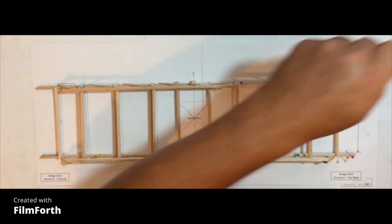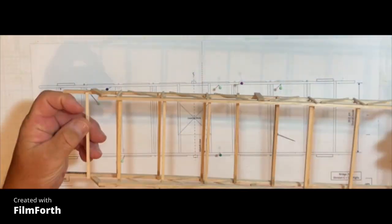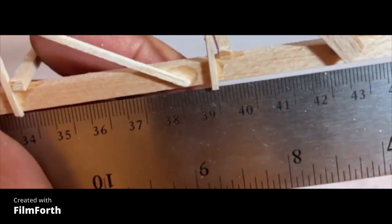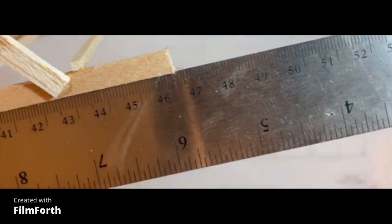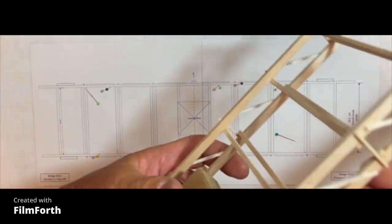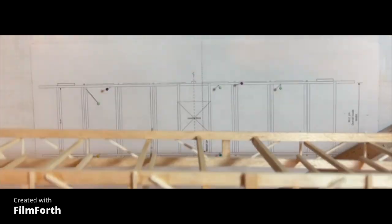All right, the bridge is complete so let's take it off of the mounting board here, removing the pins, being careful that we don't break any members. Take a look at it and see if the bonds are all good and check its overall span that's 47 centimeters. Just get a good eye of all the bond joints.